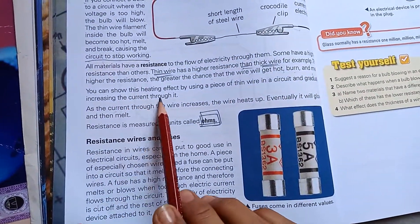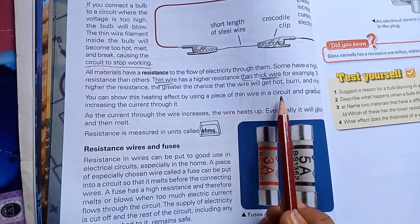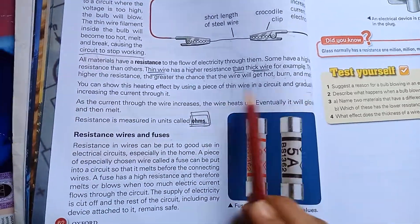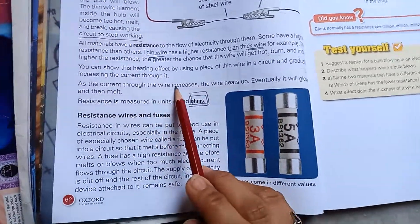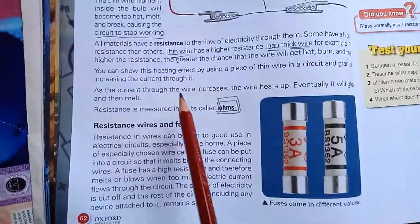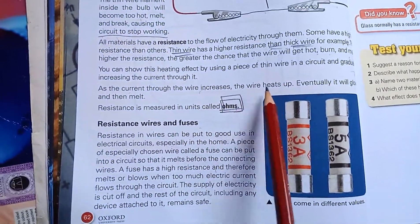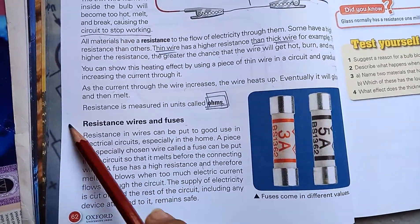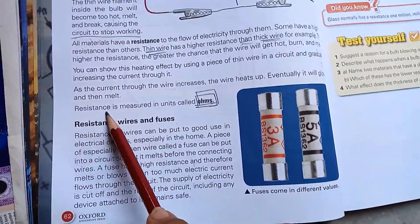The higher the resistance, the greater chance that the wire will get hot, burn, and melt. You can show this heating effect by using a piece of thin wire in a circuit and gradually increasing the current. As the current through the wire increases, the wire heats up, eventually glows, and then melts. Resistance is measured using the unit of ohm.